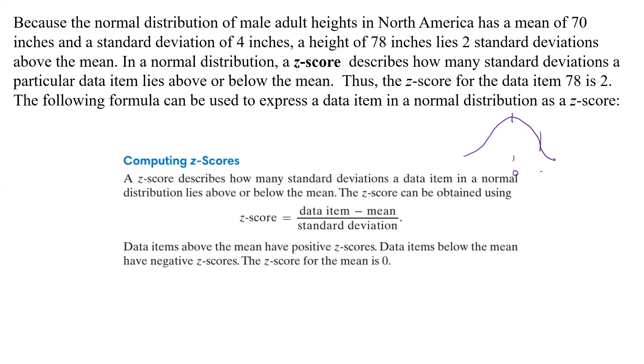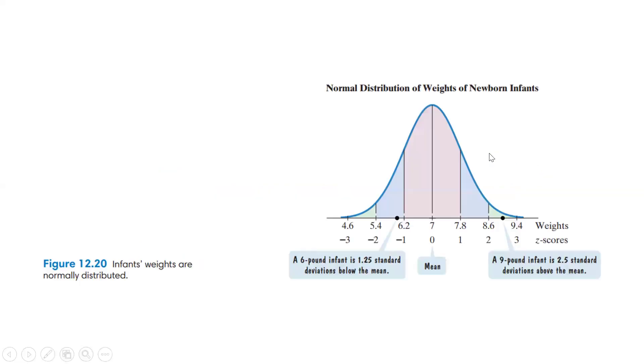If we go two standard deviations above, the z-score is 2. Two standard deviations below, the z-score is minus 2. Everything in between can have decimals, we can have all kinds of stuff for z-scores.